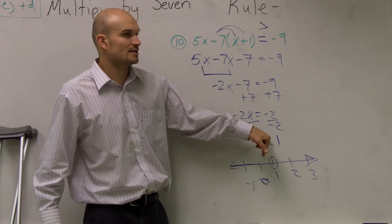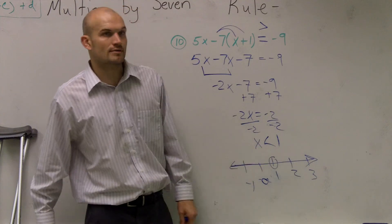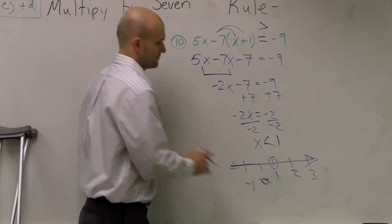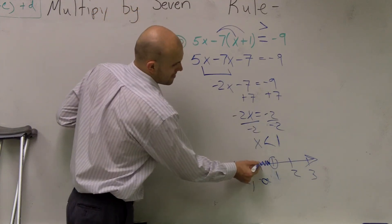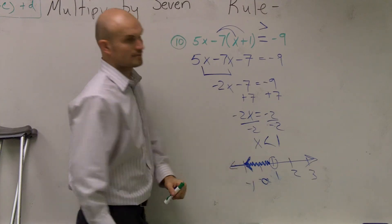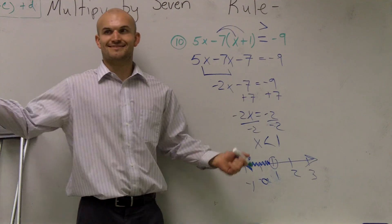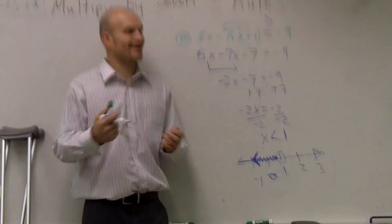Then it says x is less than 1. So which numbers on this number line are less than 1? These numbers, right? So there you go. Any questions? Yeah! Damn.